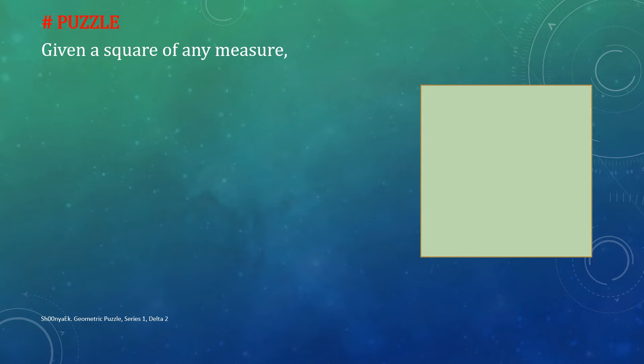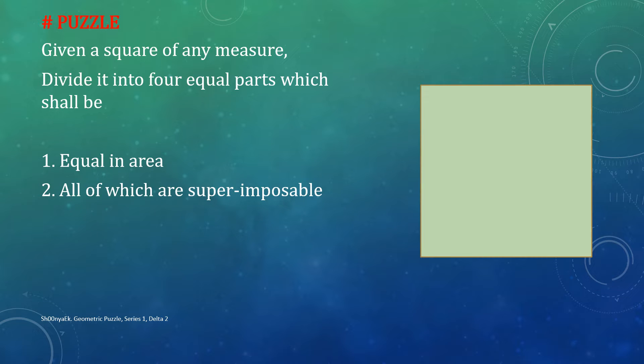The puzzle read, take a square of any size, divide it into four equal parts such that their areas are equal and that they can be superimposed.